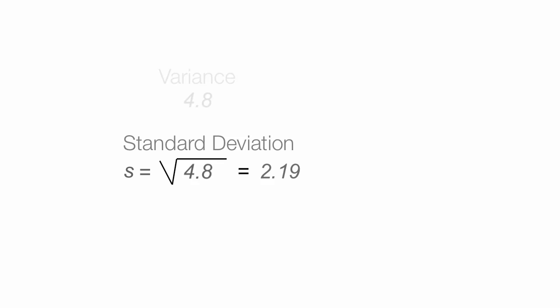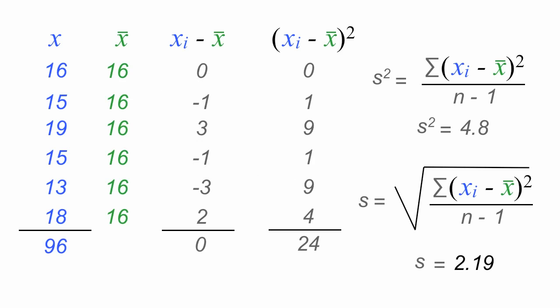Now I'm going to take the variance. And when I take the square root of the variance, I get the standard deviation. And the square root of 4.8 is equal to 2.19. And there you have it. That's how you calculate variance and standard deviation.